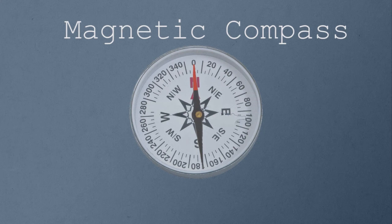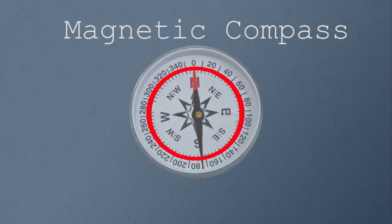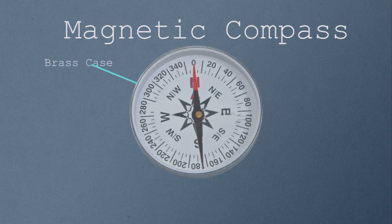Using a compass, you can identify the north and south directions. In a compass, you can find the magnetic needle at the center, and a 360-degree angle scale is placed for better measurement of directions. The needle is enclosed in a brass case, which is not a magnetic material, and on top a glass plate is fixed.